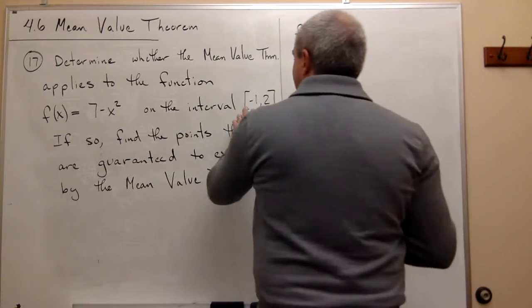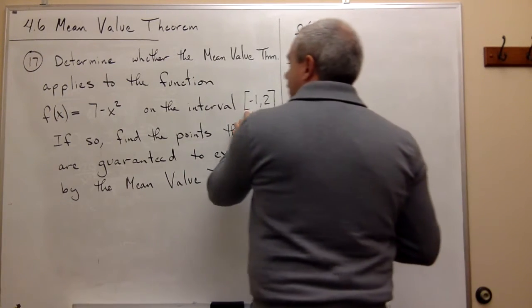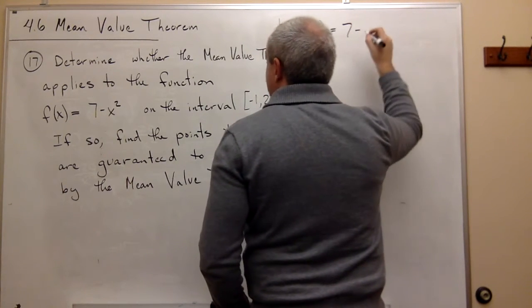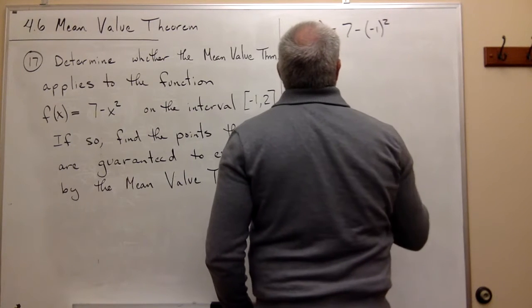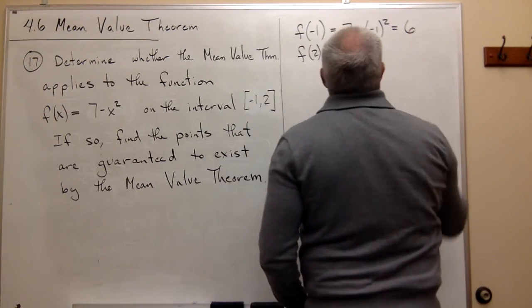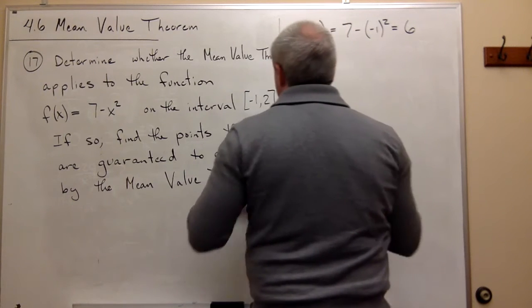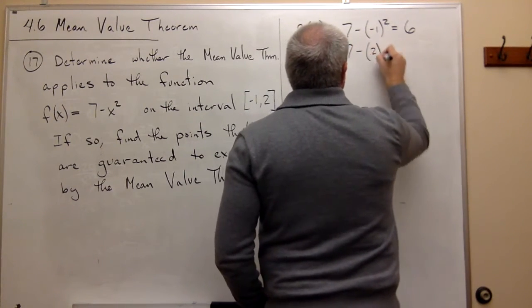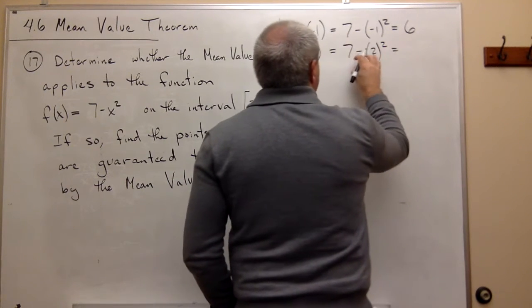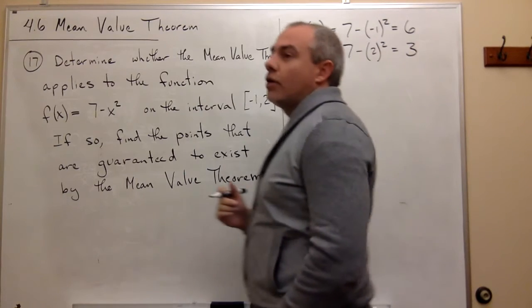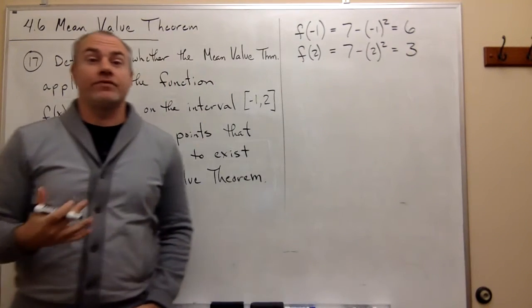So f of minus 1 is equal to 7 minus negative 1 squared, which is 7 minus 1, which is 6. And f of 2, plug in 2 here, and I get 7 minus 2 squared, or 7 minus 4, which is 3.